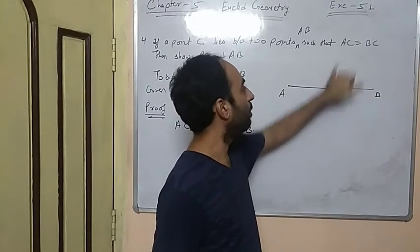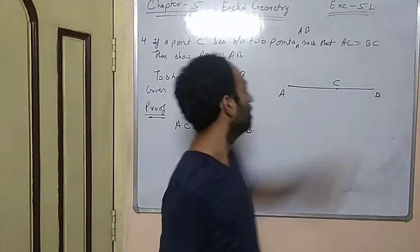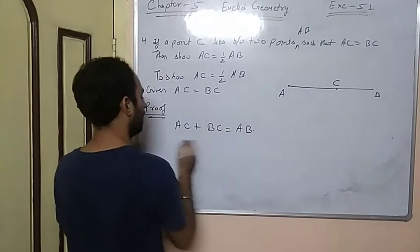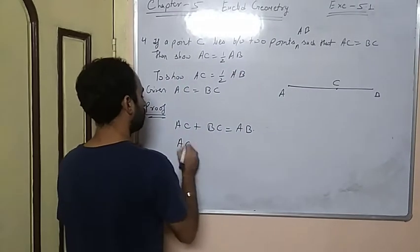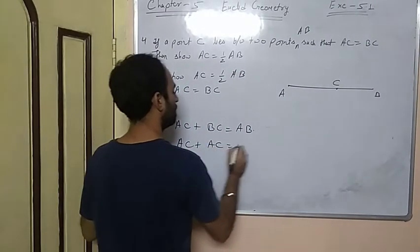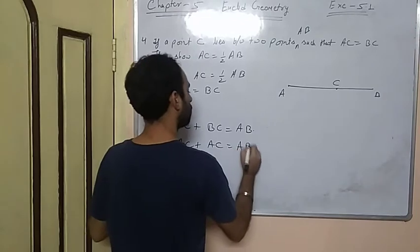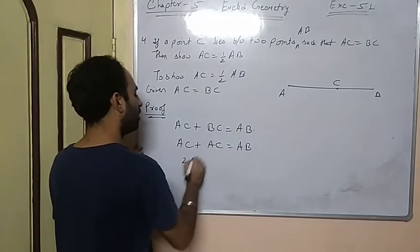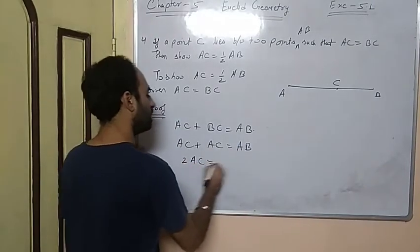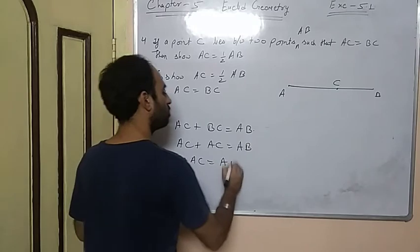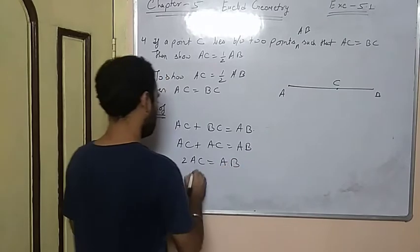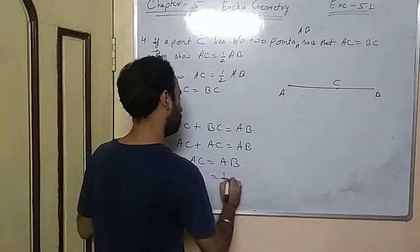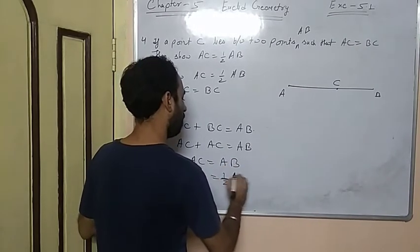Now, AC equals to BC, so in place of BC I can write AC. So AC plus AC equals to AB. Since AC plus AC is the same, this will become 2AC equals to AB. Therefore, AC equals to 1 by 2 of AB. Hence proved.